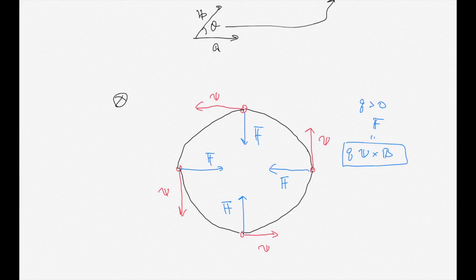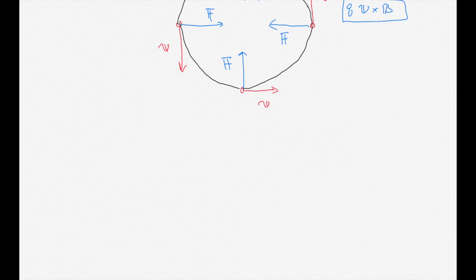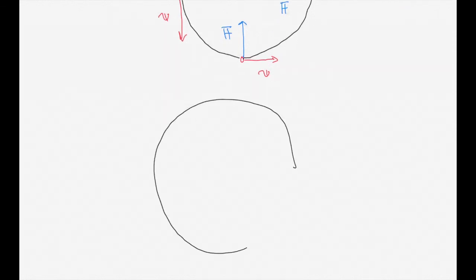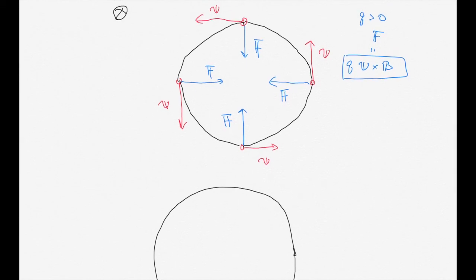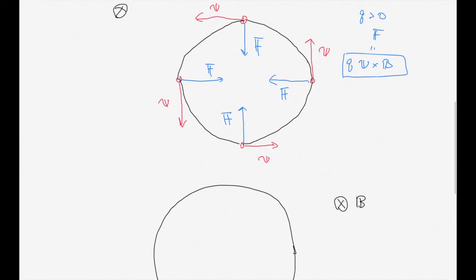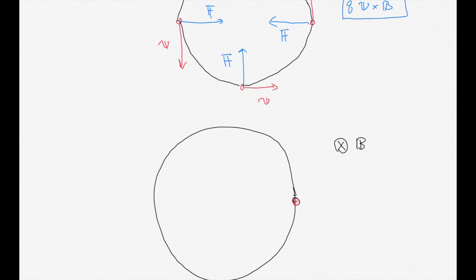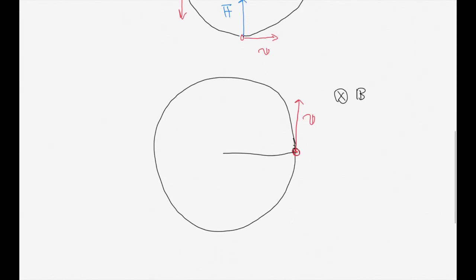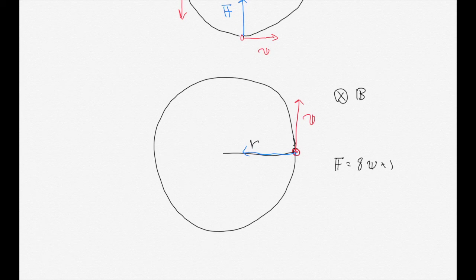Now let's come back to this question. We discovered that the orbit of a charged particle under a magnetic field is a circle. Let the magnetic field be B and the velocity of the charged particle be V. Then the radius of the circular orbit is R. The Lorentz force acting on the charged particle is F equals Q times V cross B. To find the magnitude, it is Q times V times B times sine of the angle between the velocity and magnetic field.